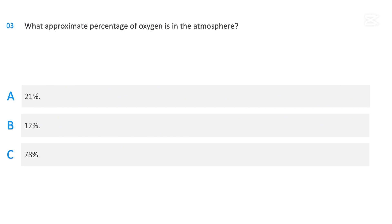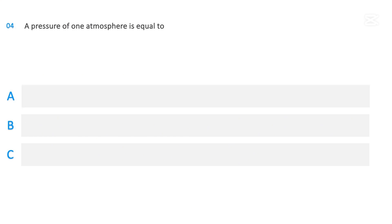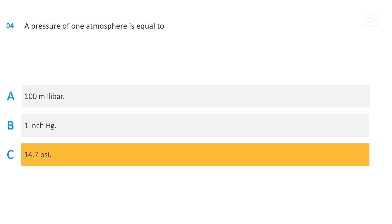What approximate percentage of oxygen is in the atmosphere? Options: 21%, 12%, or 78%. The correct answer is 21%. A pressure of one atmosphere is equal to: 100 millibar, one inch of mercury, or 14.7 PSI. The correct answer is 14.7 PSI.